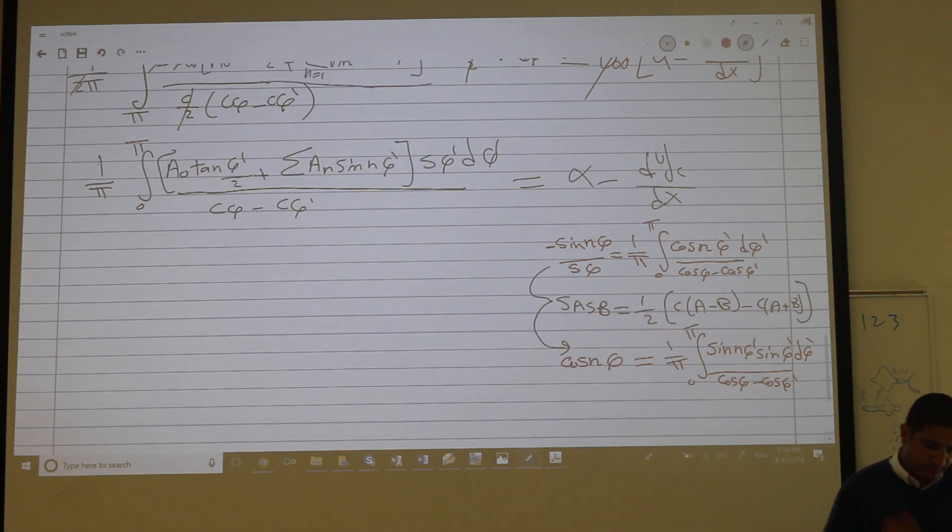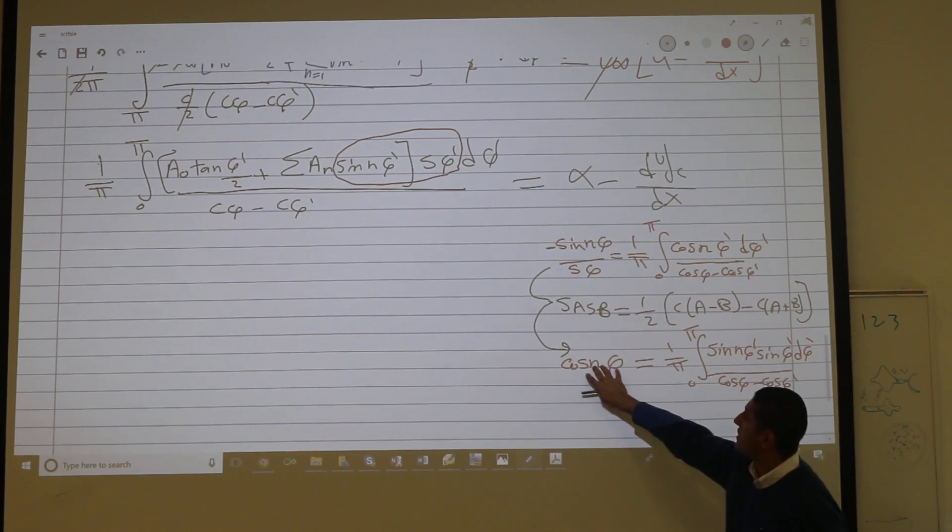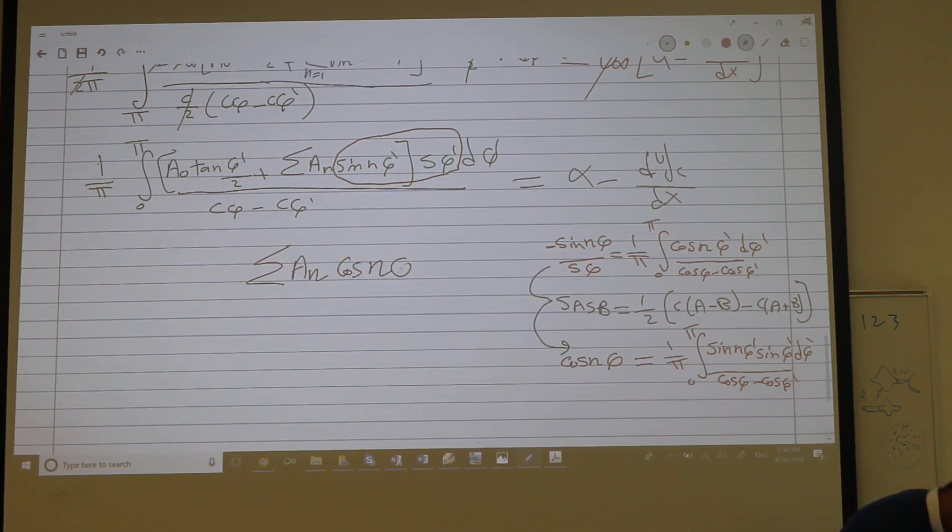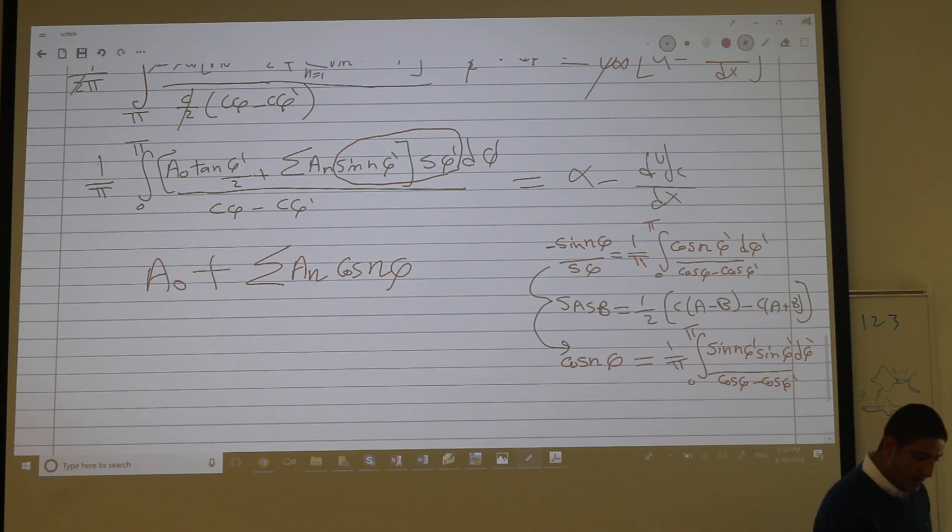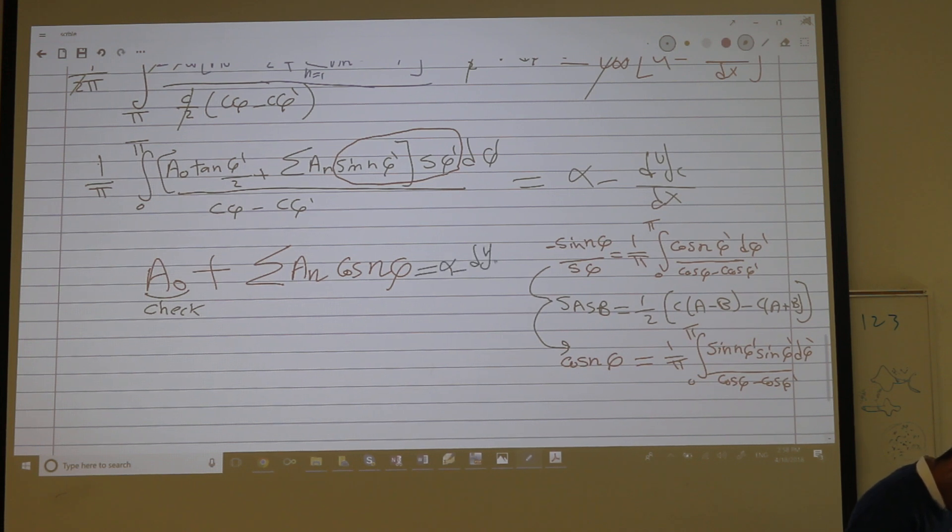So these are famous integrals that we typically use. You can see that this integral is immediately here, sine n phi sine phi over the difference of cosine gives you cosine n phi. So I have summation a n cosine n phi, that's it. This is very easy and you can check that the first term will give you a nought. This is equal to alpha minus dy by dx. I will rewrite this equation, this is the result equation.